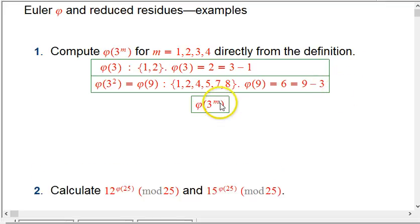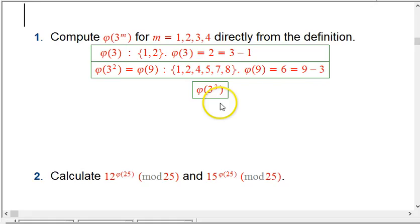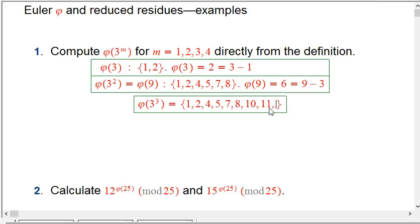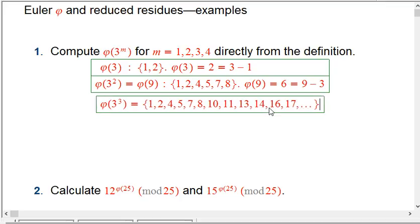So now, what's the next one? Phi of 3 cubed. I'm not going to list these all out completely, but let's see if we can just start to list them out and get the pattern. We're going to have, of course, 1 and 2, but 3 is never going to work for any of these examples. But 4 and 5. And 6 and 7. Not 6. No multiple of 3 is going to work because it shares a factor with 3 cubed. 7 and 8. Not 9. 10, 11. Not 12. 13, 14. Not 15. 16, 17. I want to think about the pattern here.